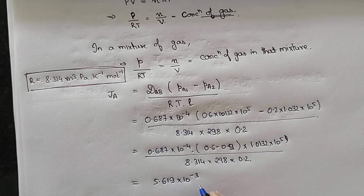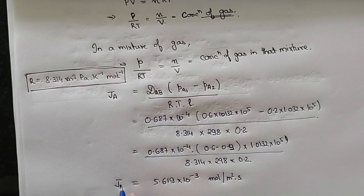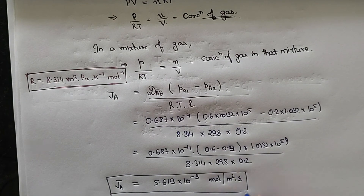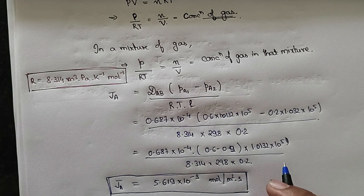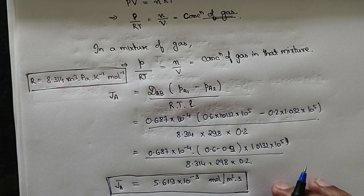The units of this flux are moles per meter squared per second. This is the value of J_A — the diffusion molar flux of helium into the mixture of helium and nitrogen. I hope this numerical is clear to you all. In the next numerical we will try to understand equimolar counter diffusion. Thank you.